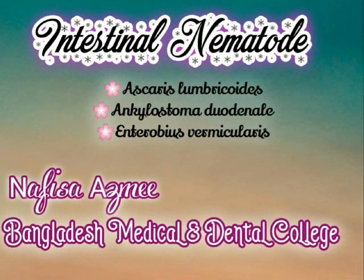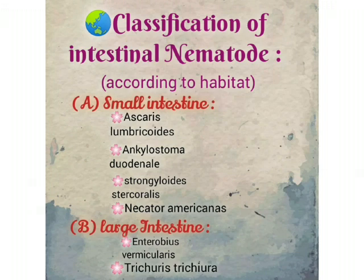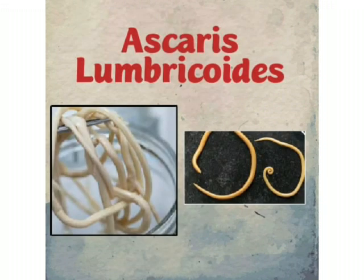Assalamualaikum. I am Afisa Ajmi from Bangladesh Medical and Dental College. Today we will discuss intestinal nematode classification. According to habitat, intestinal nematodes are classified into two types: small intestine and large intestine. In the small intestine there is Ascaris lumbricoides, Ankylostoma duodenale, and Necator americanus. In the large intestine there is Enterobius vermicularis.